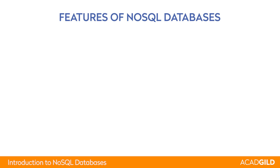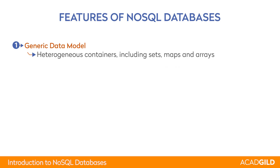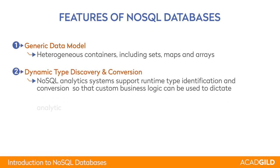Now let's look at the features of NoSQL Database. NoSQL Databases use a Generic Data Model. There are heterogeneous containers including diverse data types like sets, arrays, or maps, and they perform dynamic type discovery. We need not specify the data type all the time — this is interpreted depending upon the type of data being loaded. Conversions between data using NoSQL are implicit.